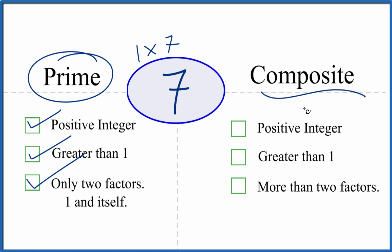But is it a composite number? It's a positive integer, it's greater than 1. But are there more than two factors that go evenly into 7? We just said there are only two factors. So there's not more than 2. It can't be a composite number.